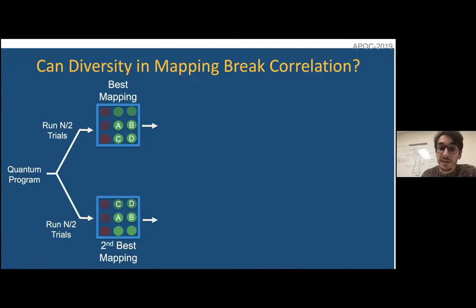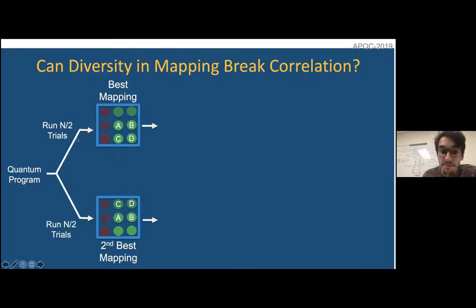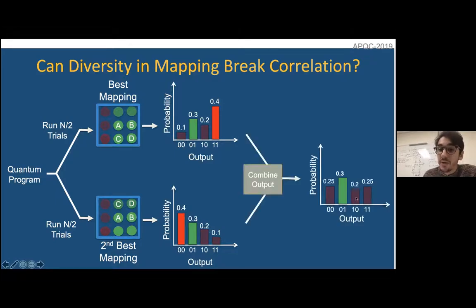One thing compilers can help do is come up with ways of mitigating these correlations. One approach that has been suggested is using multiple different compilations and combining the results statistically. If we map our program onto these four qubits versus those four qubits and look at the output distributions, the output distributions have strong correlations individually. But if we combine them, we can try to reduce that and end up with a less correlated result.